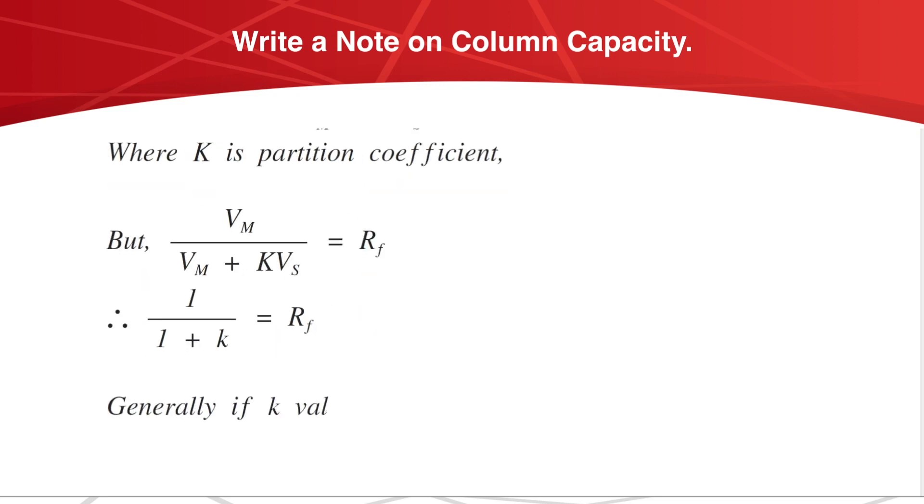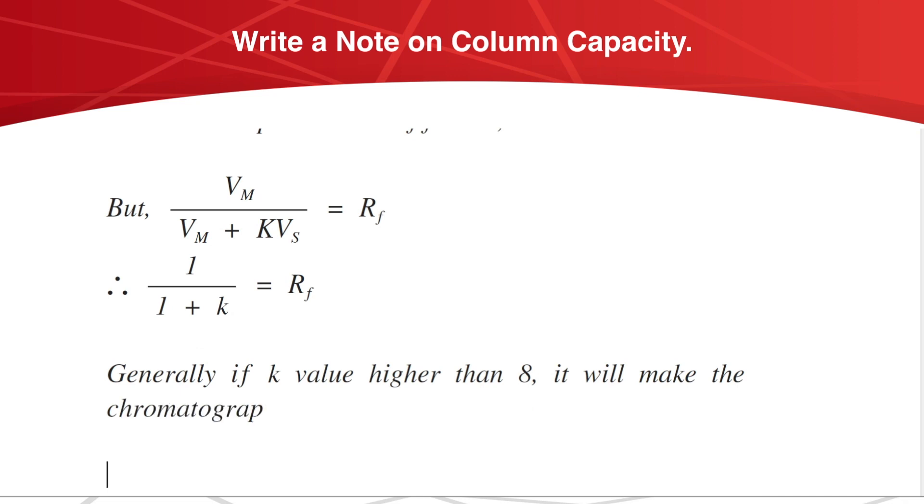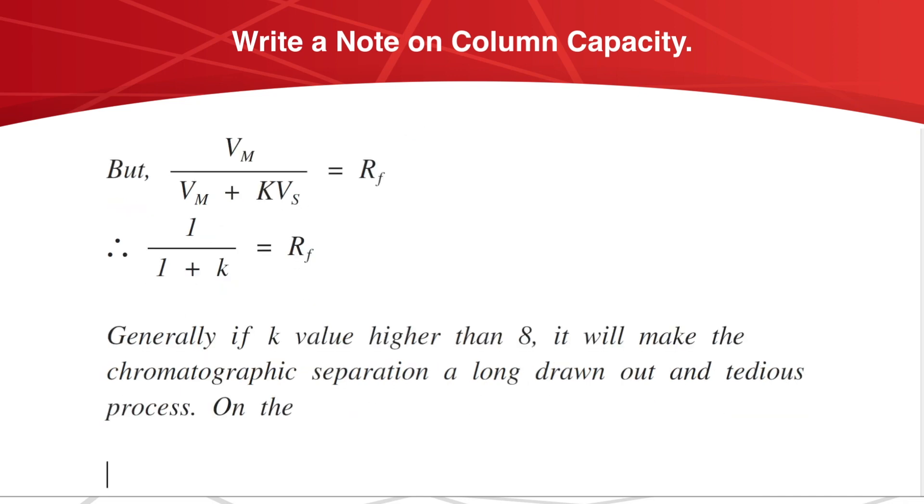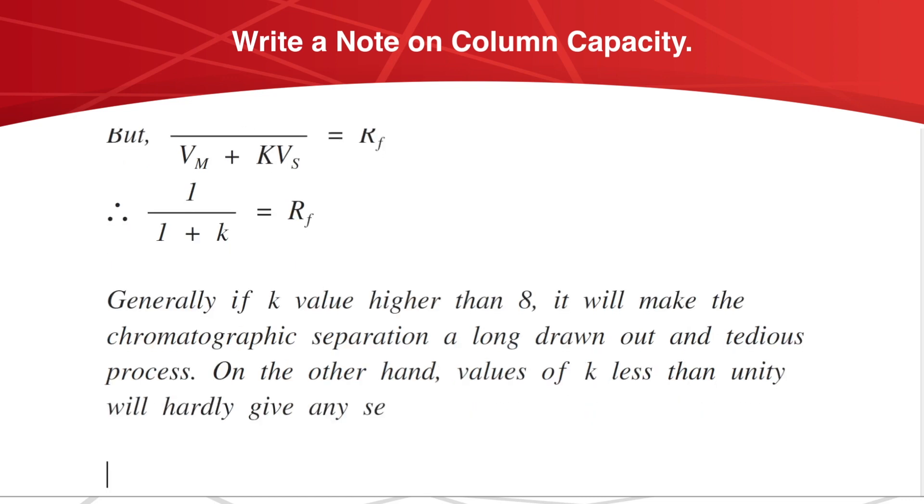Generally, if K value is higher than 8, it will make the chromatographic separation a long drawn-out and tedious process. On the other hand, values of K less than unity will hardly give any separations.